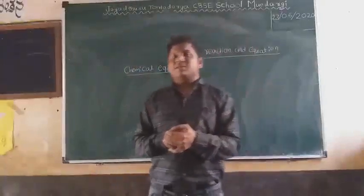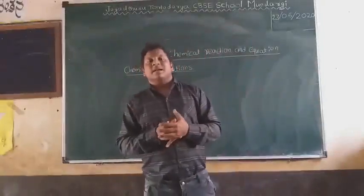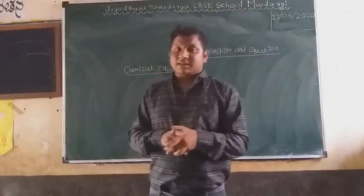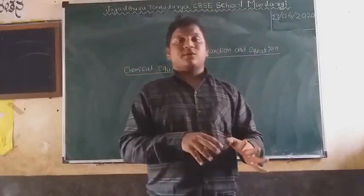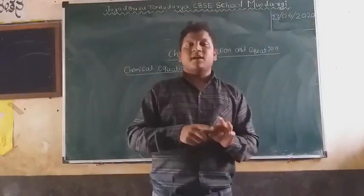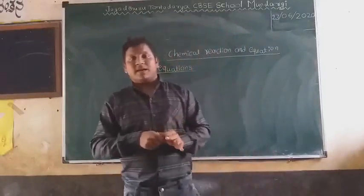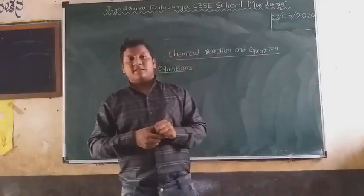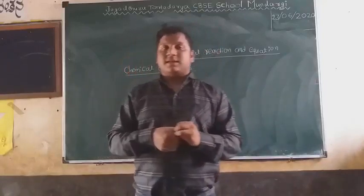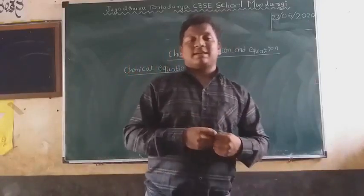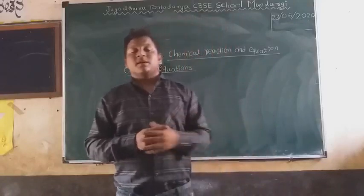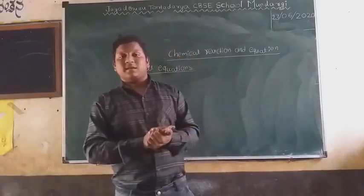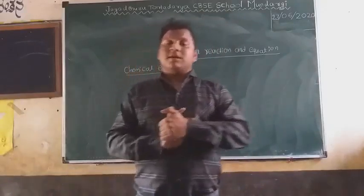In our last class, we studied the characteristics of a chemical reaction. There are five characteristics: formation of precipitate, evolution of gas, change in color, change in temperature, and change in state. Based on those characteristics, we will study the properties and categorize the types of reactions.